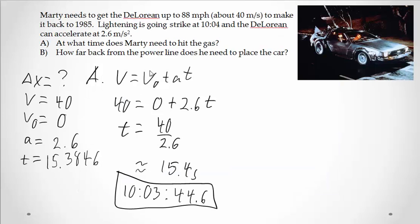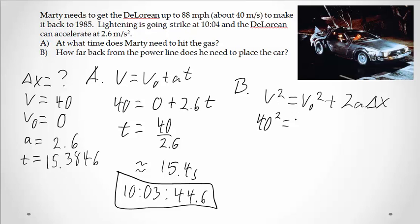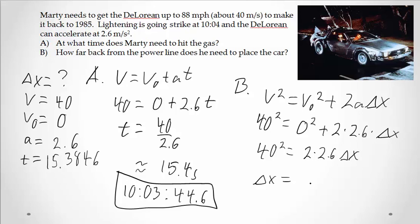Part B, I've got V squared equals V naught squared plus 2A delta X. This is going to be 40 squared. Here we've got 0 squared, 2 times 2.6 times delta X. Now I just need to solve this guy for delta X. I'm going to have 40 squared over 2 times 2.6. Plug that guy in your calculator. And you end up with approximately equal to 307.7 meters. So I rounded that.